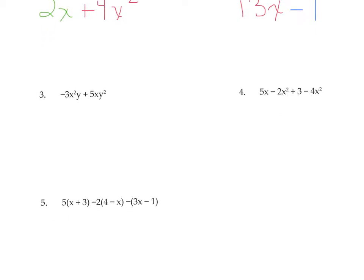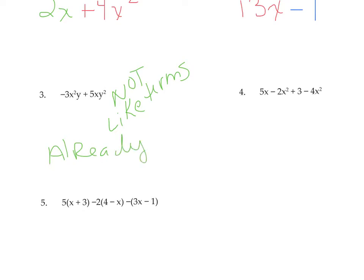On number 3, we're going to identify if these are like terms, and you have to look carefully because there's more than one variable. This is negative 3x squared y and this is 5xy squared. They sound very similar, but the exponents are in different positions. So these are not like terms — they don't have the same variables with the same exponents. So they're not like terms, and this expression is already simplified.